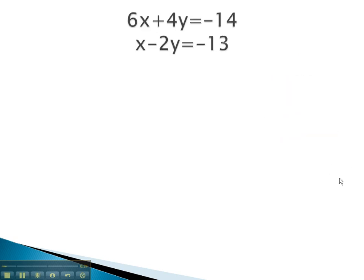For example, in this problem, we notice that there is a lone variable or a variable with no coefficient or number in front. This is the one we will attempt to isolate. We can get the x alone quickly by adding 2y to both sides. When we've done this, we see that x is equal to negative 13 plus 2y.